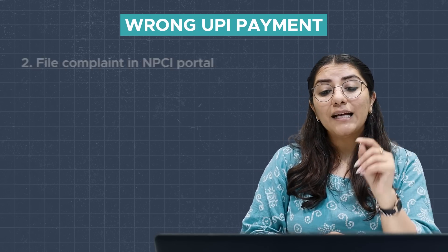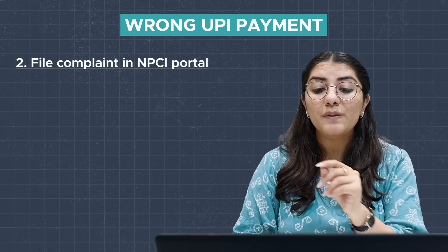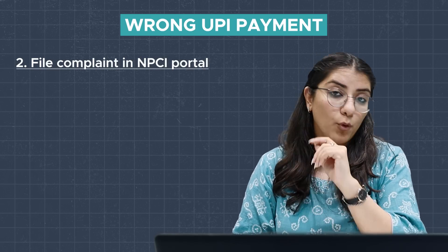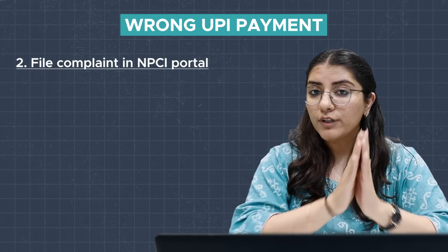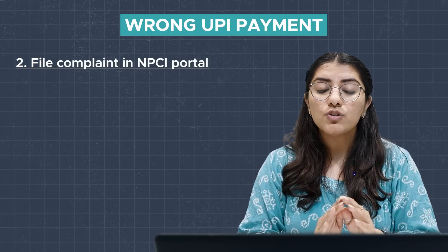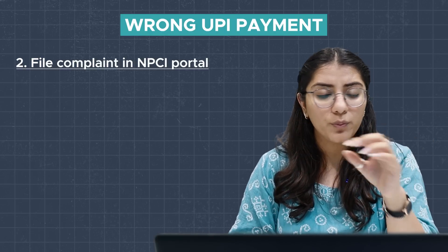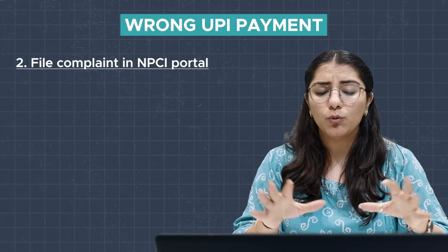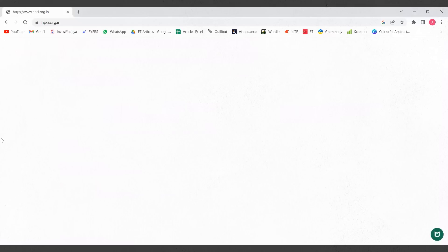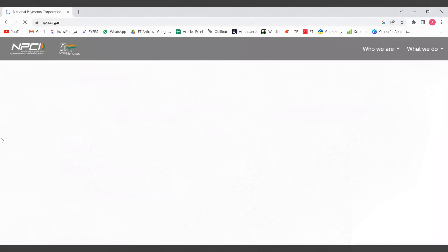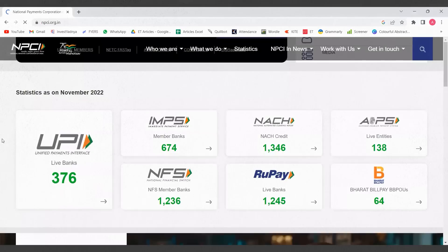The second solution is to file a complaint on the NPCI portal. If your complaint is not solved with the above method, and the customer service of the UPI app does not help you much, then you go to the NPCI site, which is our national payment portal, and go to their website.